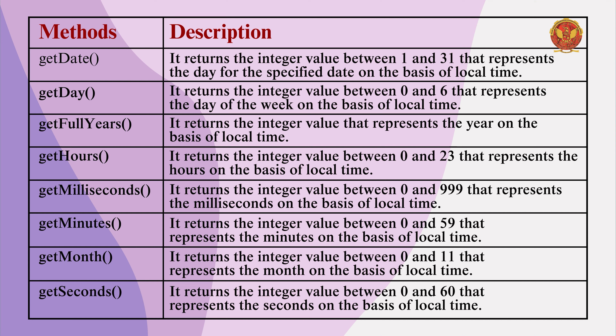getMinutes is there, and it returns an integer value between 0 and 59, which represents minutes based on local time. getMonth returns an integer value between 0 and 11, which represents your month based on the local time.